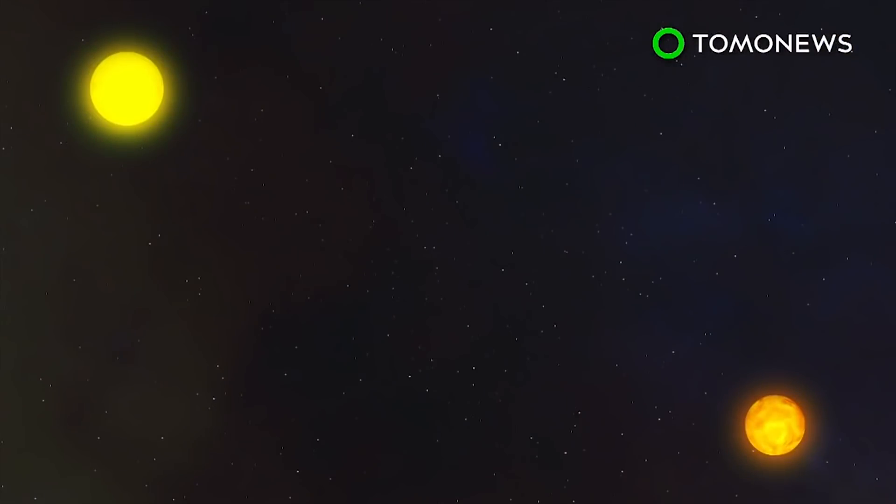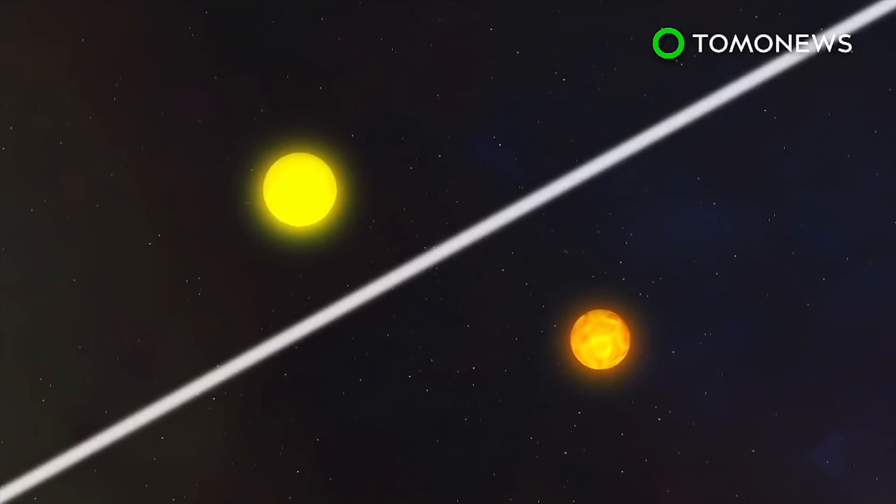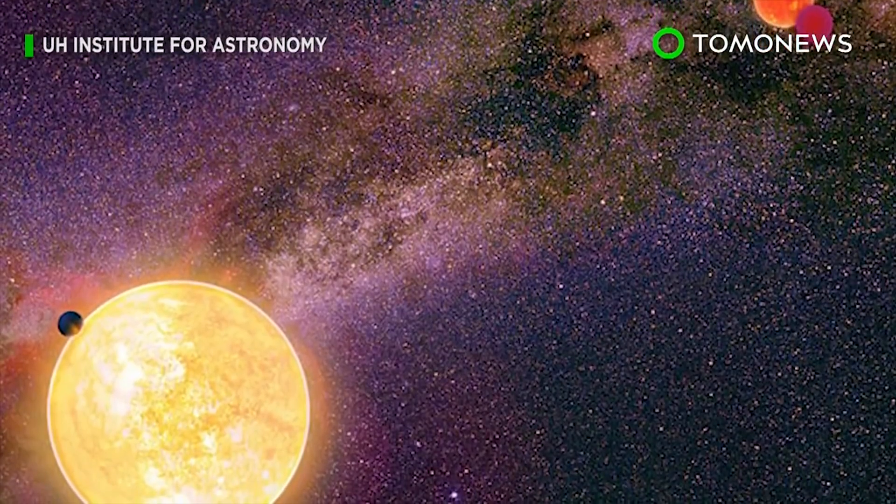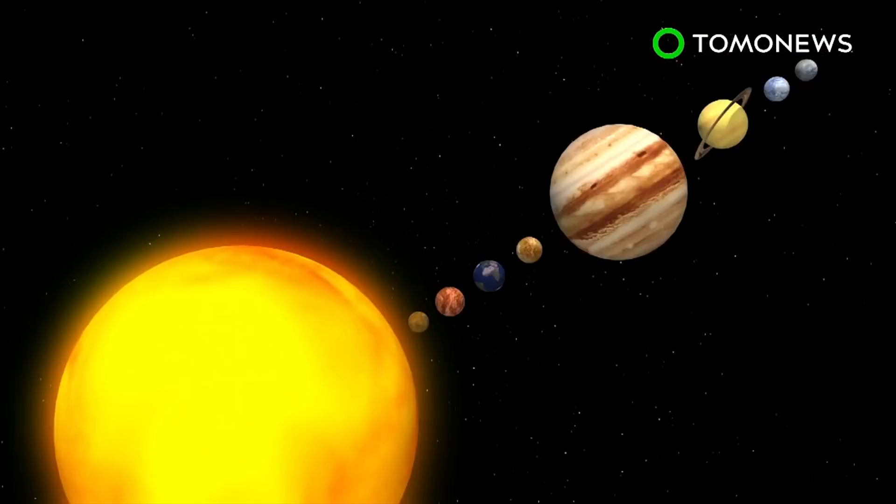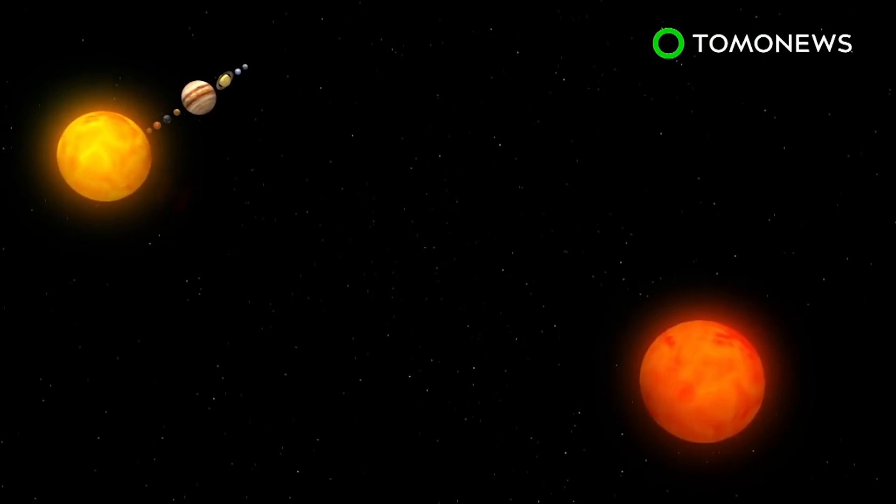A new study has found that sun-like stars initially form as wide binaries and either come together or break apart over the next million years. Some systems, like the Alpha Centauri, even form as triplets. Our sun would have been separated by a distance of 500 or more astronomical units from its twin star before it was believed to have moved farther away.